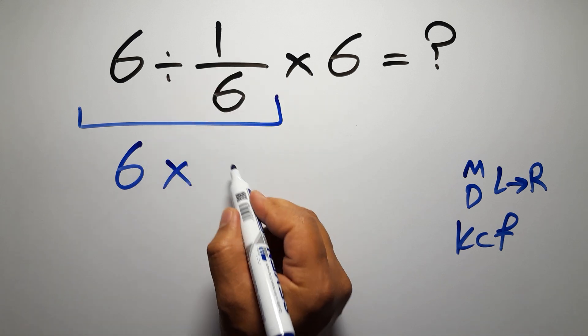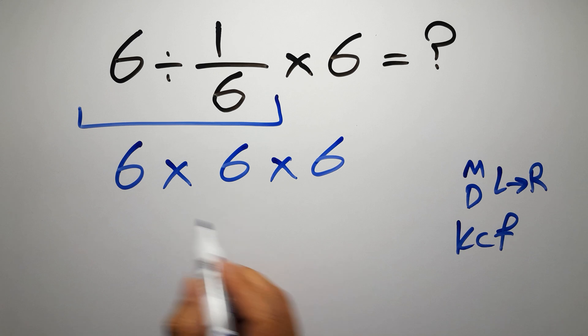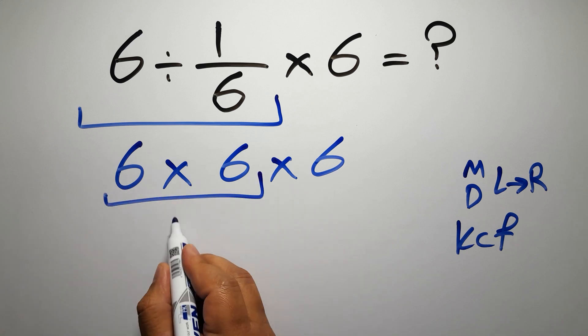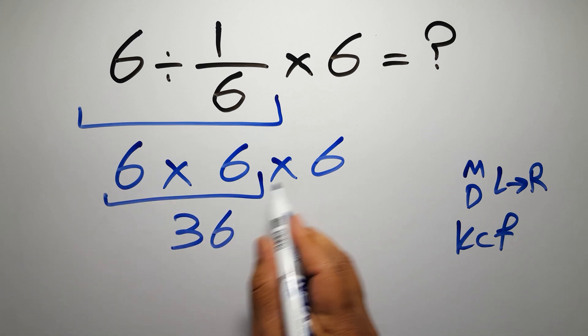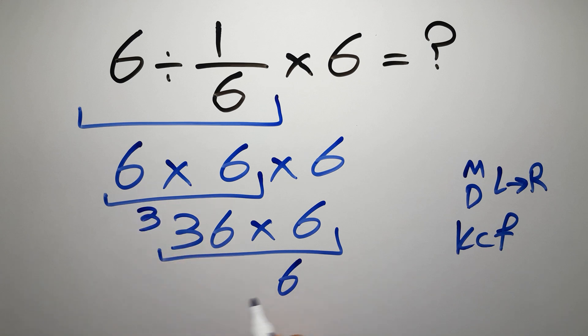Flip the second fraction, then times 6. 6 times 6 gives us 36, and 36 times 6... 6 times 6 gives us 36. We write 6 here and carry 3 here. 6 times 3 gives us 18, and...